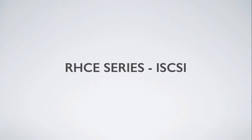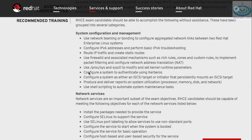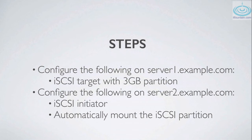Welcome to another RHC series video. In this one we'll look at iSCSI. The objective is to configure a system as either an iSCSI target or an initiator that persistently mounts an iSCSI target. On server 1 we'll create a 3GB partition and create a logical volume group on that partition, then configure the server as an iSCSI target. On server 2 we will connect to the iSCSI target, create a file system on it, and make sure the partition mounts automatically even after a reboot.